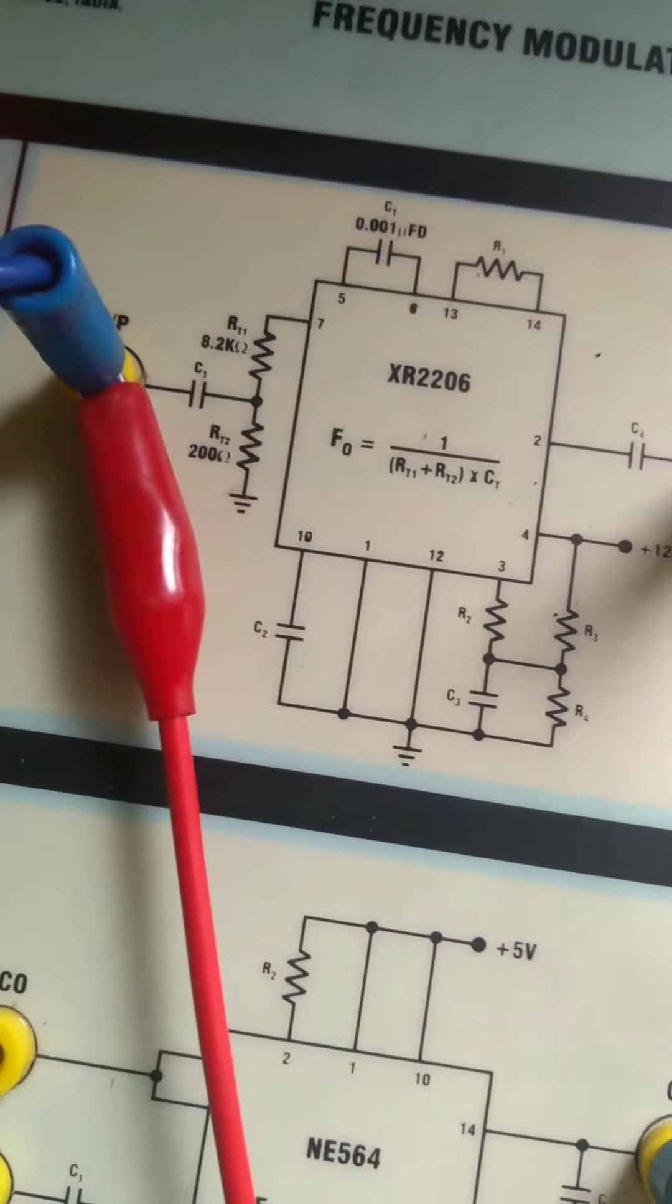Frequency modulator circuit using IC XR2206 frequency modulator. This is the carrier input. This is the modulator.